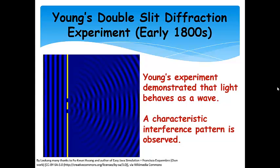Now, in the early 1800s, Young performed something called the double slit diffraction experiment. He passed light through two slits, which then diffracted the light as it passed through.